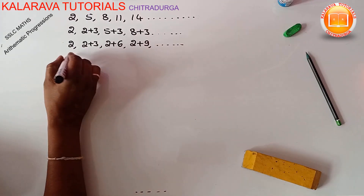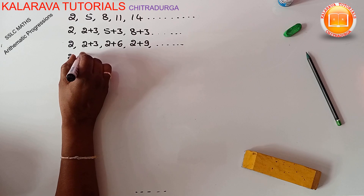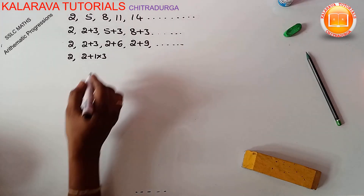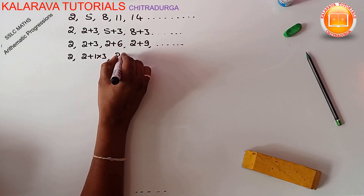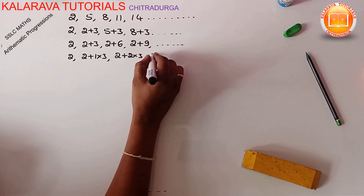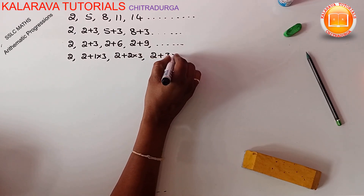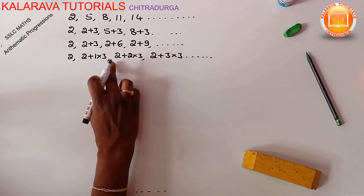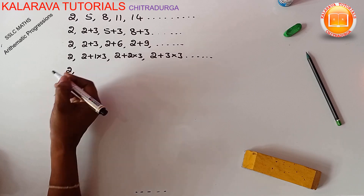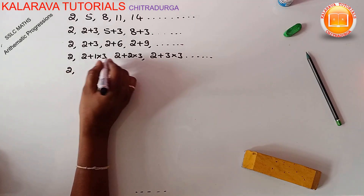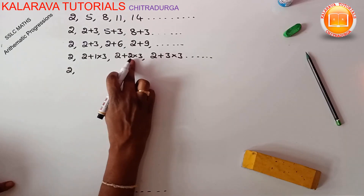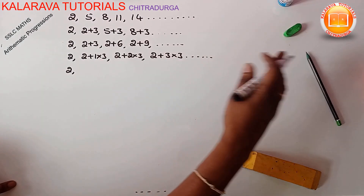We add a fixed number, and the multiples of that fixed number give us each successive term. For the first term we write 2; for the second term we add the fixed number one time; for the third term we add the fixed number two times; for the fourth term we add three times the fixed number, and so on.